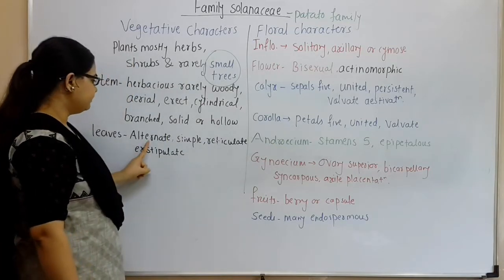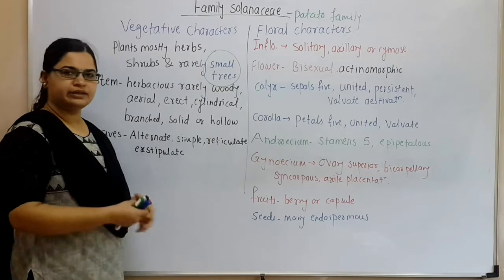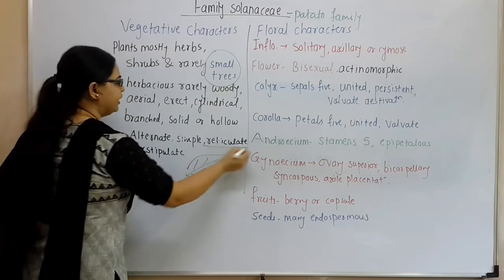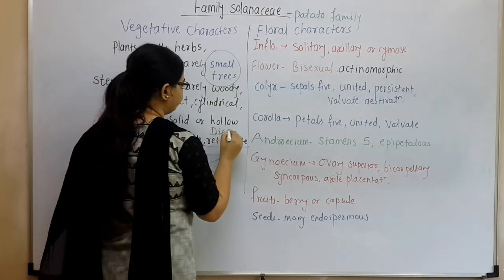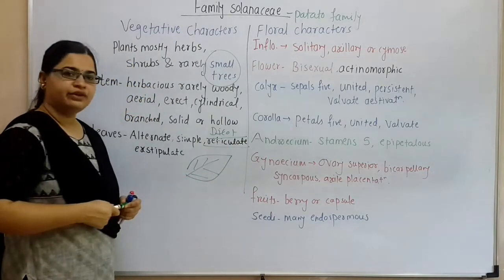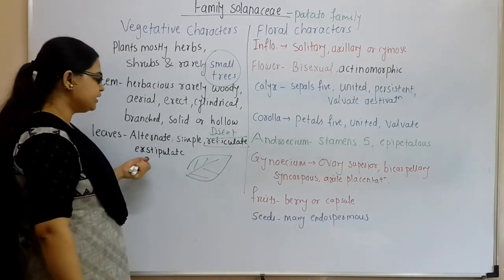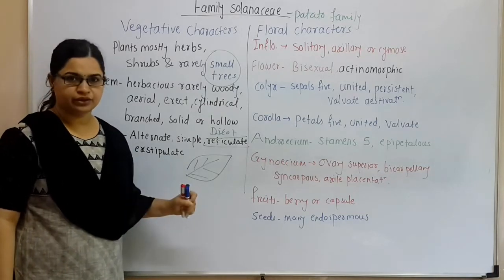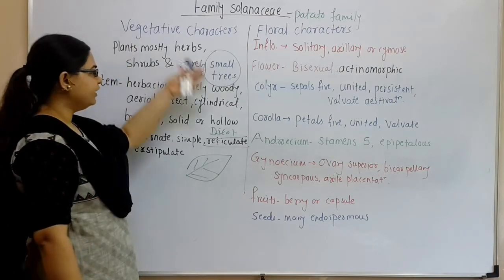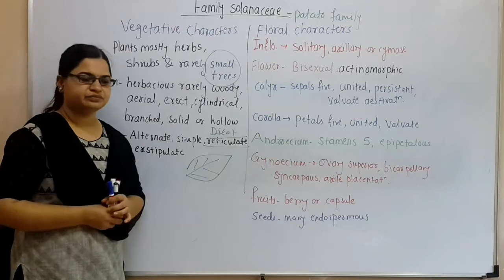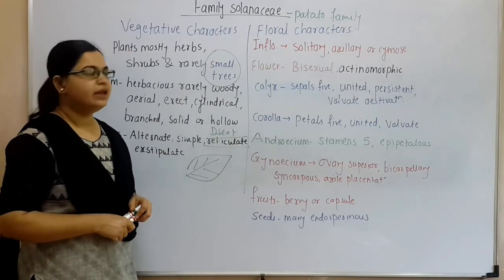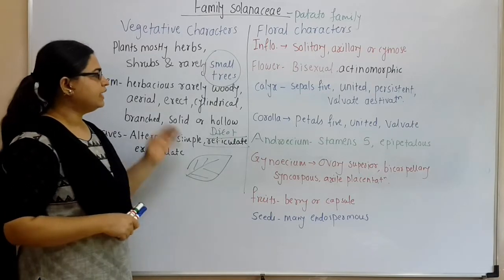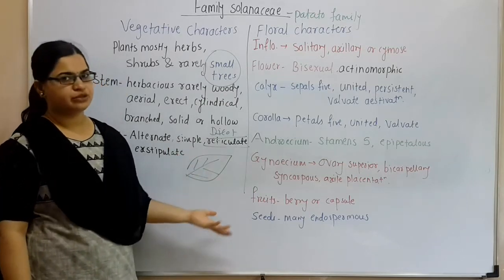Leaves are alternate and simple — simple means only one leaf is present at a time. Reticulate venation, because it is a characteristic of dicots. Stipules are absent (ex-stipulate) in this family. These are very easy and simple characteristics of this family, but questions can be asked from this area, so make a note of it.